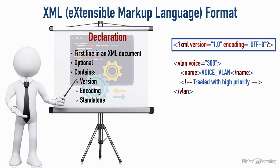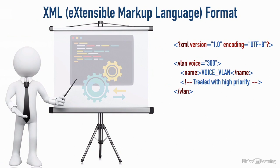What we see on screen is very typical of an XML declaration. Now let's look at another component — a tag. A tag is a string of text enclosed between a less-than sign and a greater-than sign. For example, notice the tag of voice VLAN enclosed in the name tag. The tag starts with name in brackets, and it ends with name in brackets except with a forward slash in front of it. So we've got a start tag and an end tag.